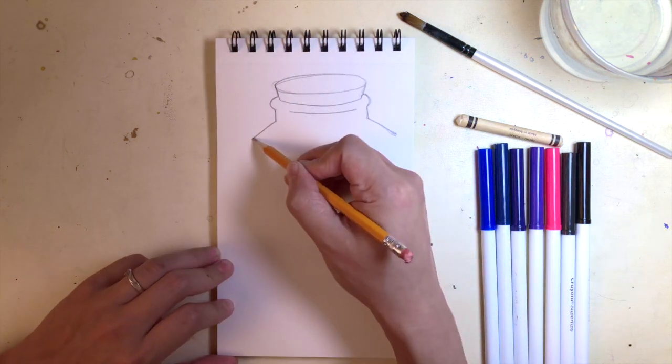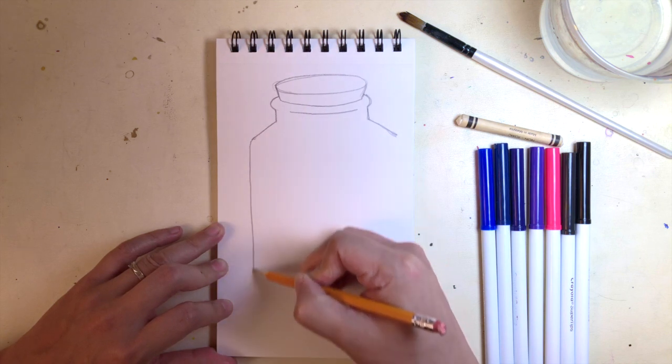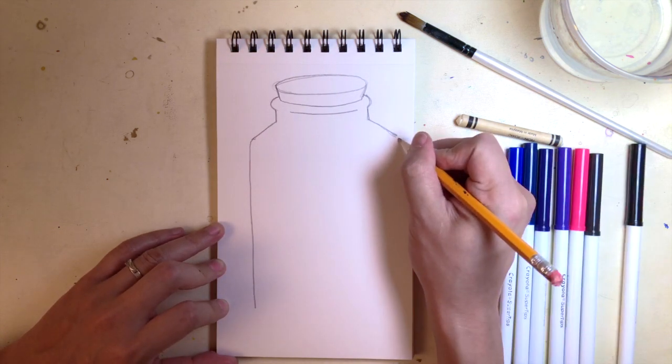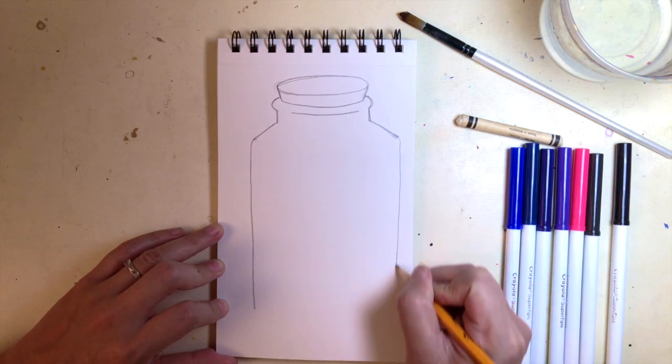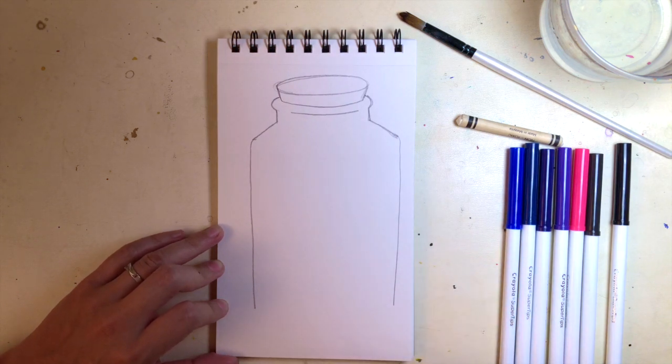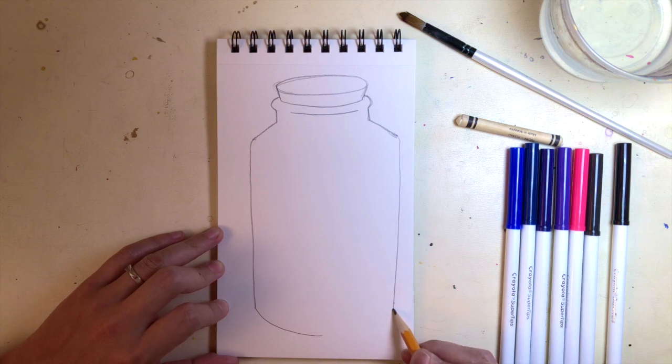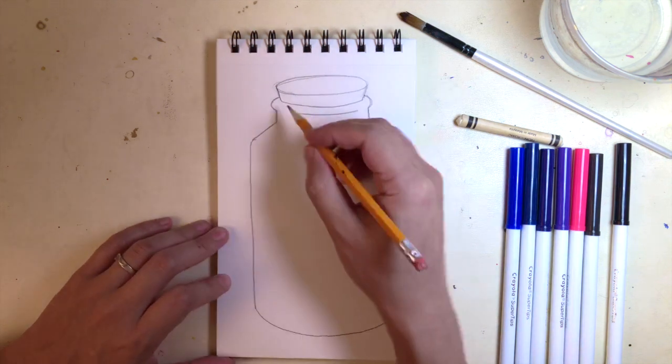This will be the top part of the jar, and then this will be the body. So a straight line going down to the bottom of the page, and then connecting the two straight lines with a big curve, like little bolts at the bottom. So very simple, this is just a regular glass jar.